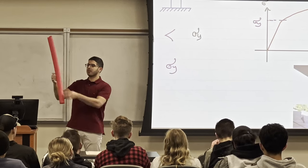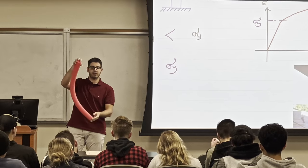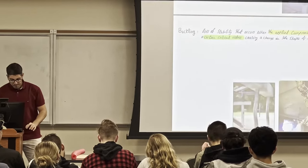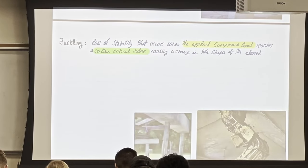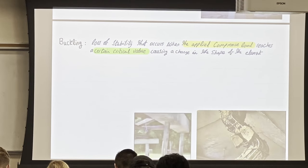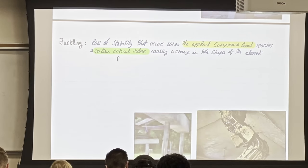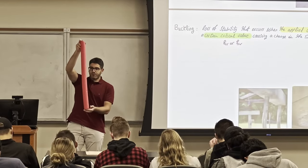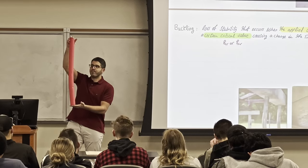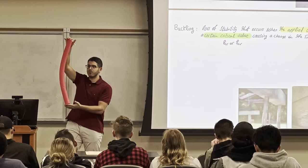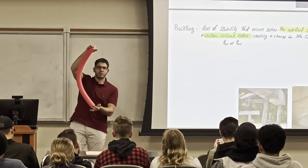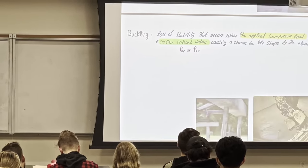Although the material is safe — you don't see the material crushed — what you see is a huge deflection. This is what we call buckling. Buckling is not a material failure; it's an instability that happens based on shape. This loss of stability occurs when we apply a compressive load and reach a certain critical value, which we call PCR or FCR, the critical load. Once you reach this critical value, a very small stress causes a huge deflection.